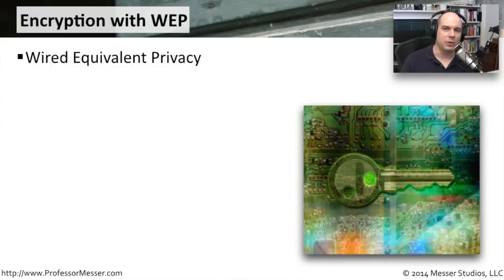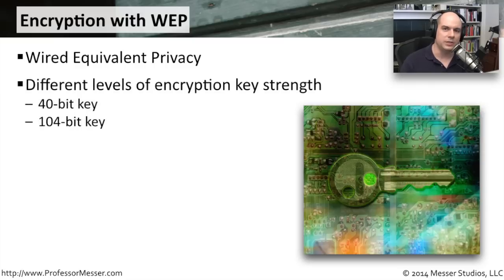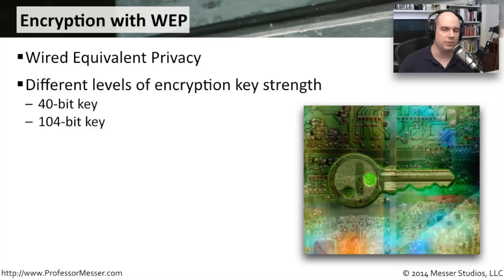When our 802.11 networks first came out, we came out with an encryption methodology called WEP — Wired Equivalent Privacy. Like the name implies, we wanted to have the same level of protection on our wireless networks as we were getting on our wired networks. The way this worked is you could set up encryption keys in your wireless access point, either 40-bit keys or 104-bit keys, depending on which you'd like to use.